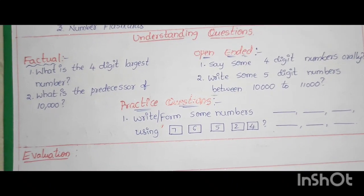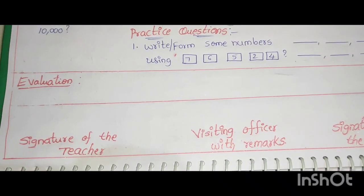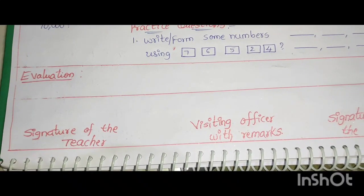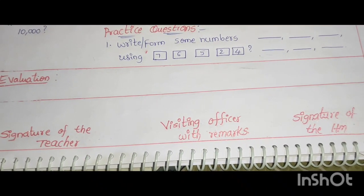Next process is evaluation. Evaluation is while learning going. Signature of the teacher, signature of the HM, visiting officer with remarks. These are the process for large numbers in 4th class.